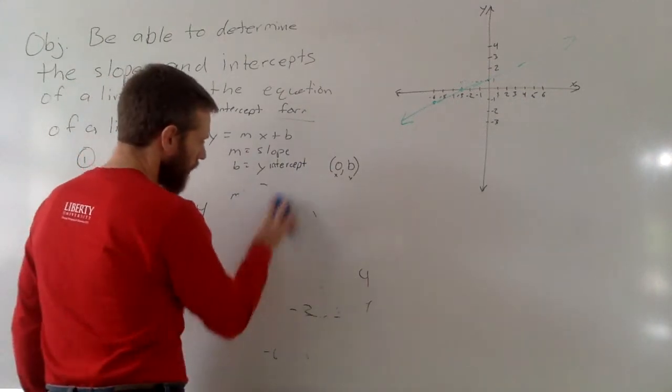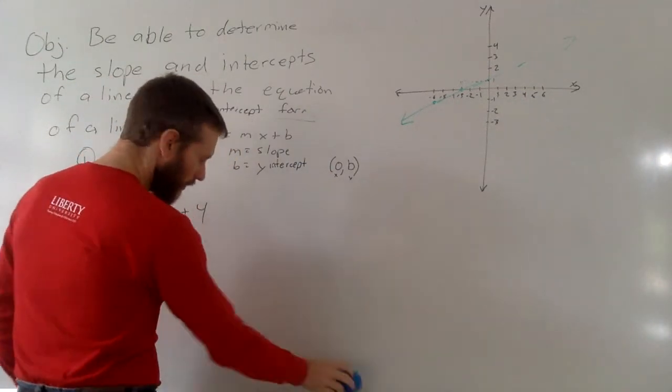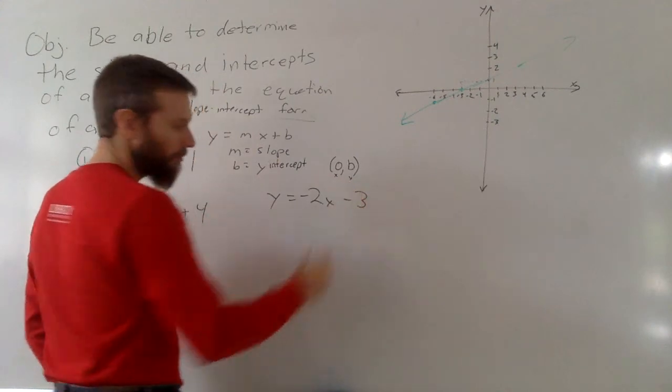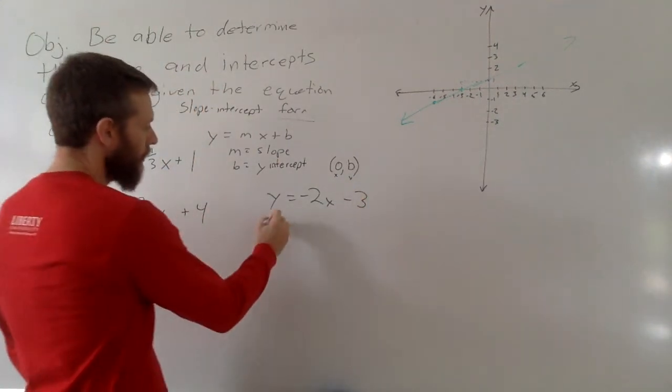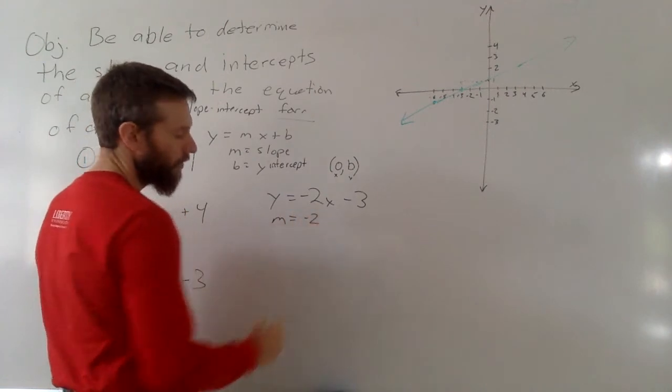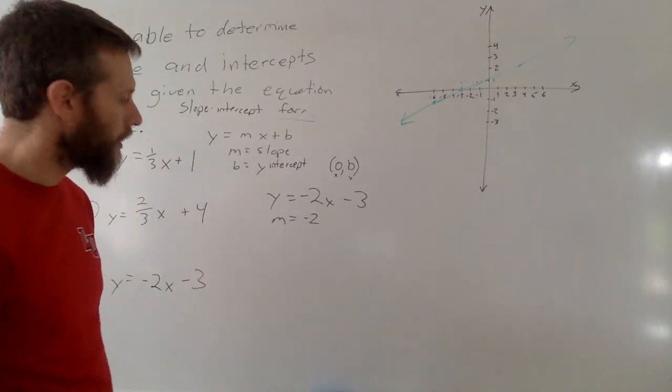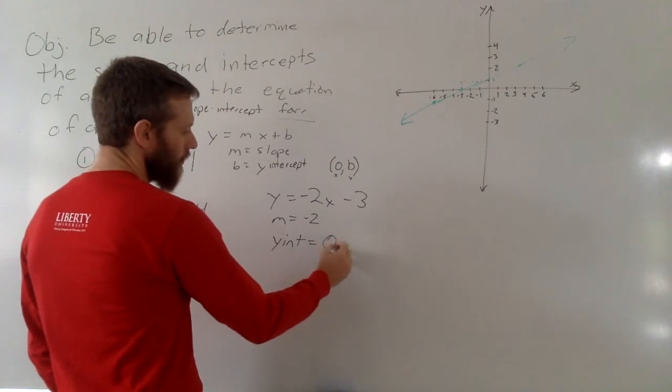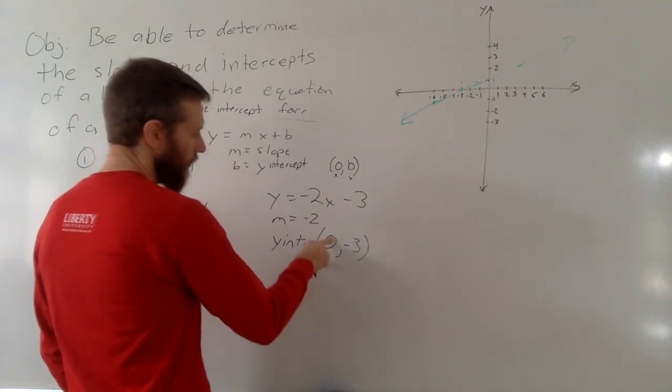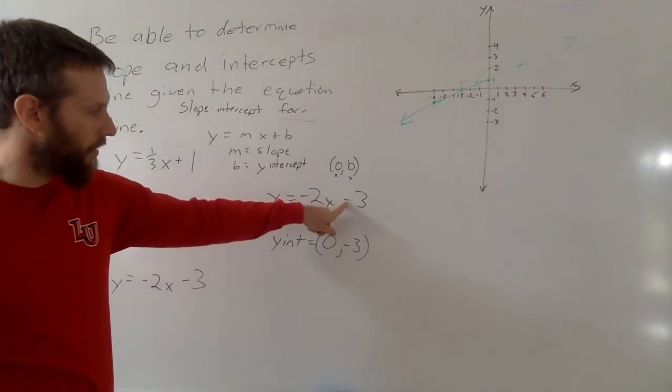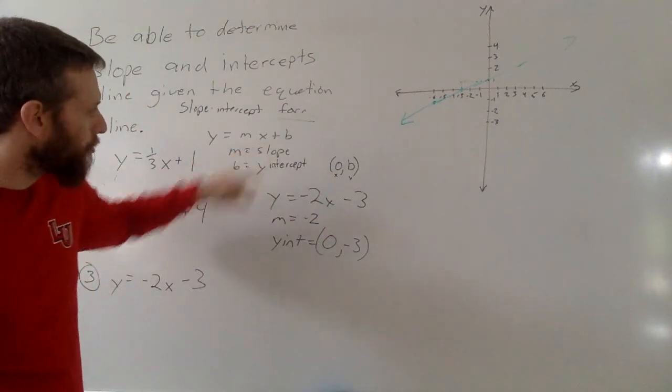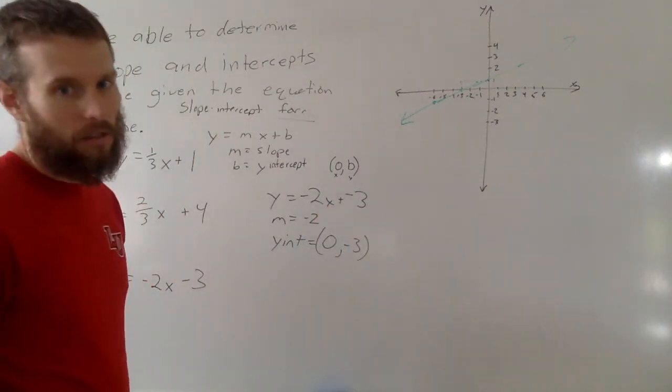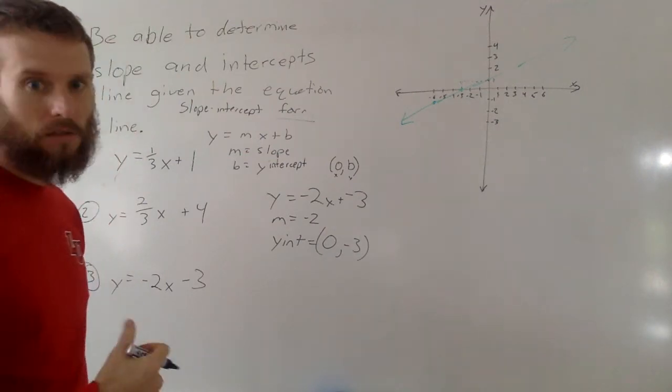And last problem, y equals negative 2x minus 3. So our m, our slope, is going to be a negative 2. And we know that if you want to write it still, it's rise over run, it's negative 2 over 1. We know that the y-intercept is 0 comma negative 3, because here is our, don't forget that this is a negative. We say y equals mx plus b, so if I wanted to say negative 3 as y equals something x plus something, well, minus 3 will be plus negative 3.